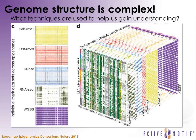The Roadmap Epigenomics Consortium just completed and published several papers in Nature this year, and you can see here just the complexity of the situation. You have several different histone modifications, DNA hypersensitivity indicating active regions, RNA-seq indicating gene expression throughout the genome, and whole genome bisulfite sequencing which looks at the genome-wide methylation state of every CpG dinucleotide. Together, these marks work to either activate or repress gene expression.